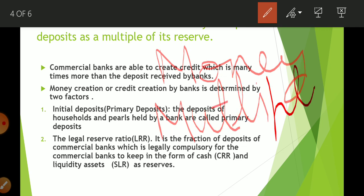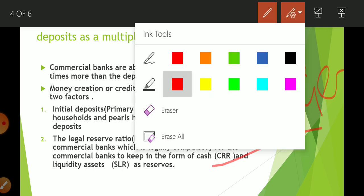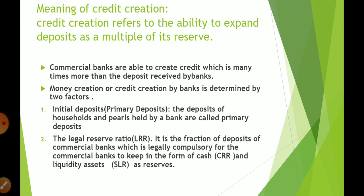Today we will discuss the meaning of credit creation and some important terms. The equation and working model of the credit creation process will be covered tomorrow. Credit creation refers to the ability to expand deposits as a multiple of its reserve. Whatever initial deposit is received by the commercial bank, it is going to lend money many more times — depending on the money multiplier.